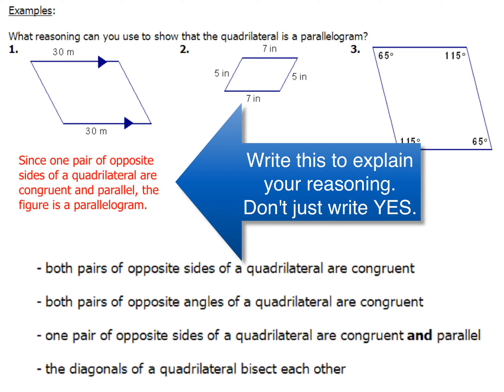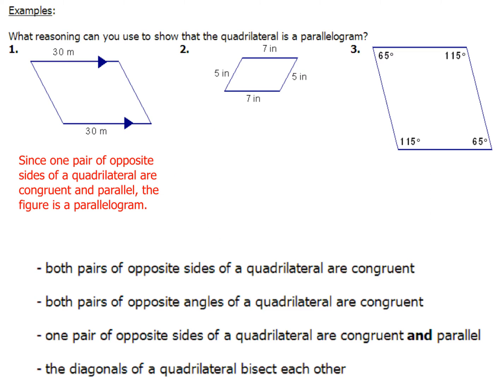You can't just write the word yes or no. Moving on to example number two — we've got two pairs of sides that are both congruent, which means we use that very first reason at the top: both pairs of opposite sides of the quadrilateral are congruent.